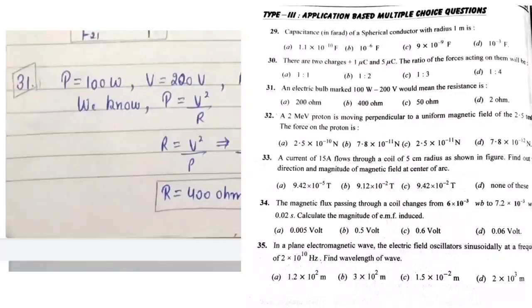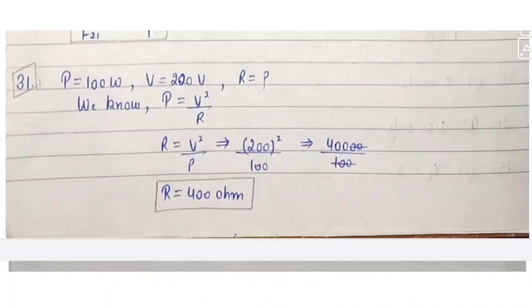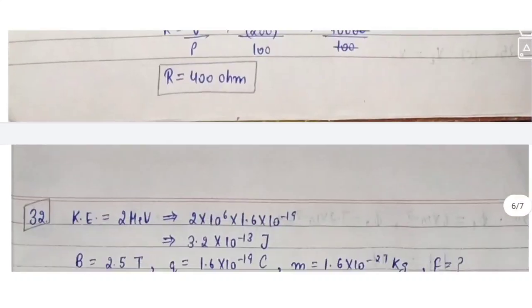Question 31: a bulb marked 100W, 200V — find its resistance. Using P = V²/R, just put in the values and solve for R to get the answer.